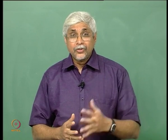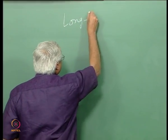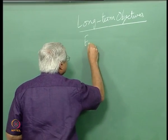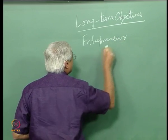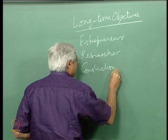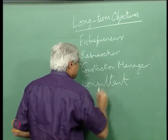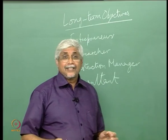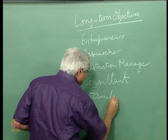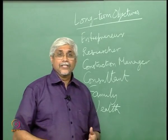Now you would have written what you want to be ten years from now. Let me tell you some of the answers I get. The long-term objectives could be becoming an entrepreneur, becoming a researcher, a construction manager, maybe a consultant, or something not really related to the field. It could be that the main objective is to have a happy family, or it could be wealth — maybe the most important thing a person would desire is to be rich.